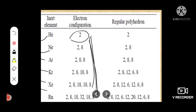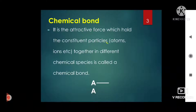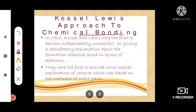What is meant by chemical bonding? A chemical bond is the attractive force which holds the constituent particles — atoms or ions — together in different chemical species. In other words, a chemical bond is the attractive force which holds the atoms together in the formation of a molecule.